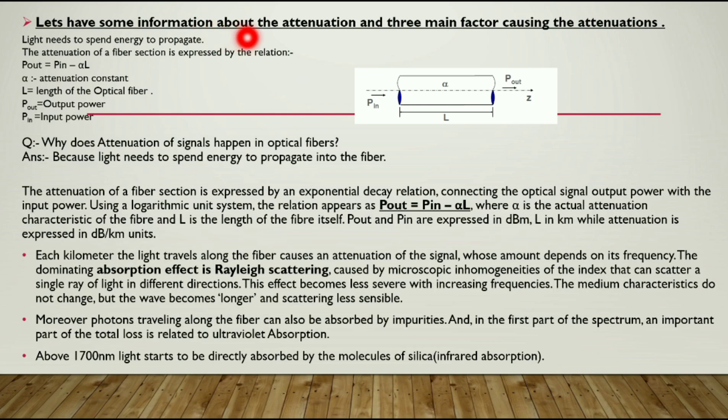Let us have some information about the attenuation and three main factors causing the attenuation. Light needs to spend energy to propagate. The attenuation of a fiber section is expressed by the relation P_out equals P_in minus alpha L, where alpha equals the attenuation constant, L equals the length of optical fiber, P_out equals output power, and P_in equals input power.